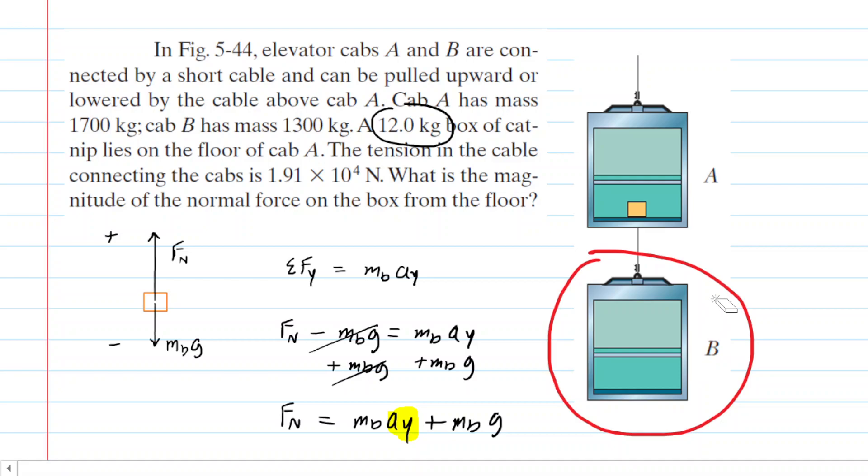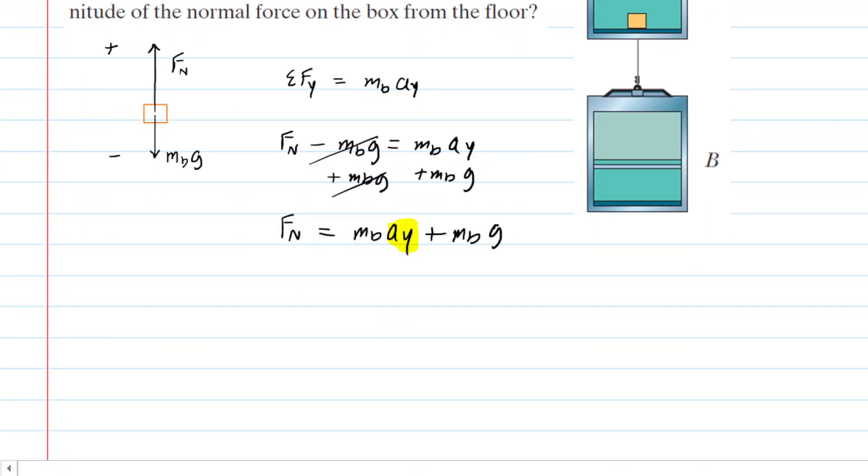Let's take a look at cab B because we will be able to actually solve for the acceleration of cab B, which again is the same as the acceleration of the box of catnip.